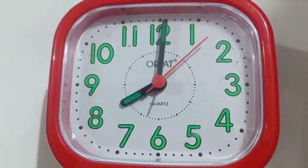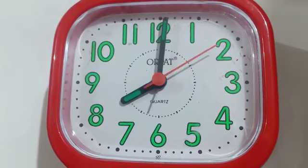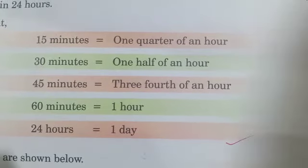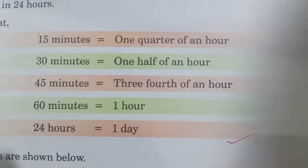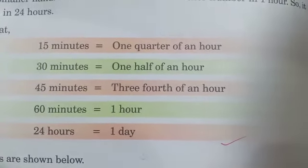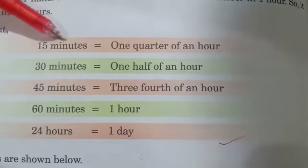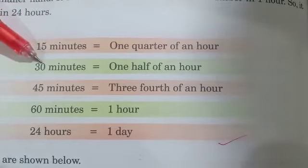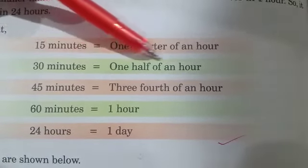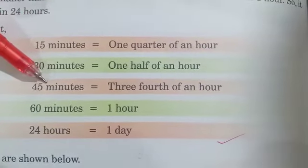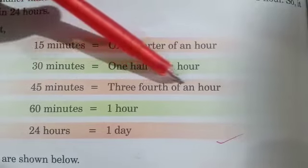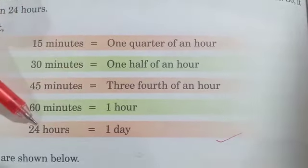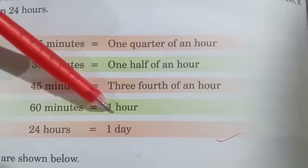Children, 24 hours means 1 day. So: 15 minutes equals 1 quarter of an hour; 30 minutes is 1 half of an hour; 45 minutes is 3 fourths of an hour; 60 minutes is 1 hour; and 24 hours is 1 day.